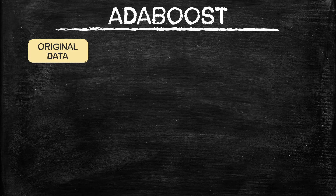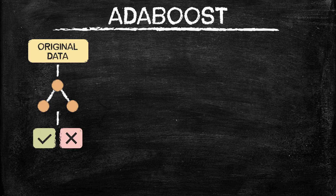AdaBoost is going to start with the original data, and that data is going to be fed into a weak learner — a very weak decision tree. In fact, the decision tree you see here, with one node splitting into two outputs, is called a stump, and that's what we're going to be using. These very simple decision trees take one feature and split the outputs into two classes. The output of this stump is going to give us some classes that were predicted accurately and some that were not — and here is the step that differs between boosting and bagging.